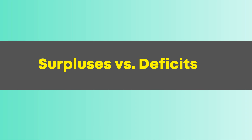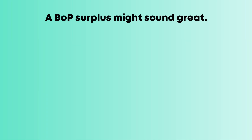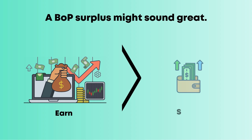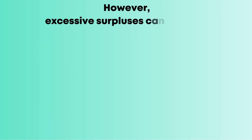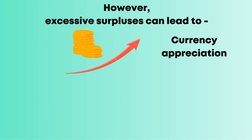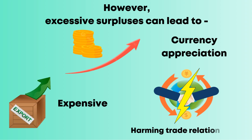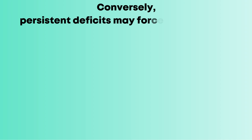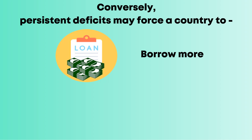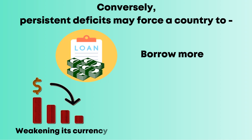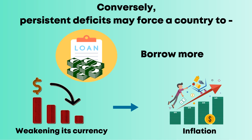A BOP surplus might sound great — it means a country earns more than it spends. However, excessive surpluses can lead to currency appreciation, making exports expensive and potentially harming trade relationships. Conversely, persistent deficits may force a country to borrow more, weakening its currency and leading to inflation concerns.